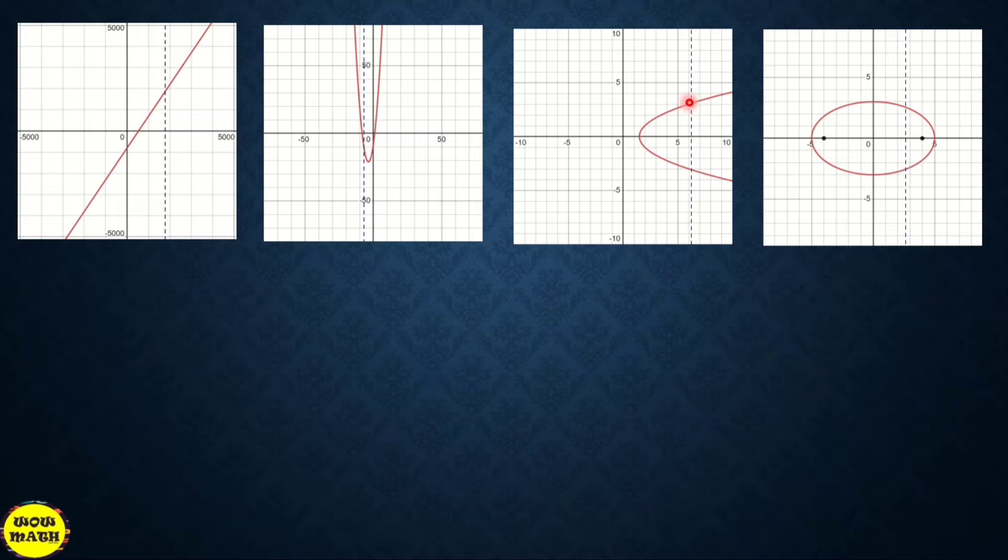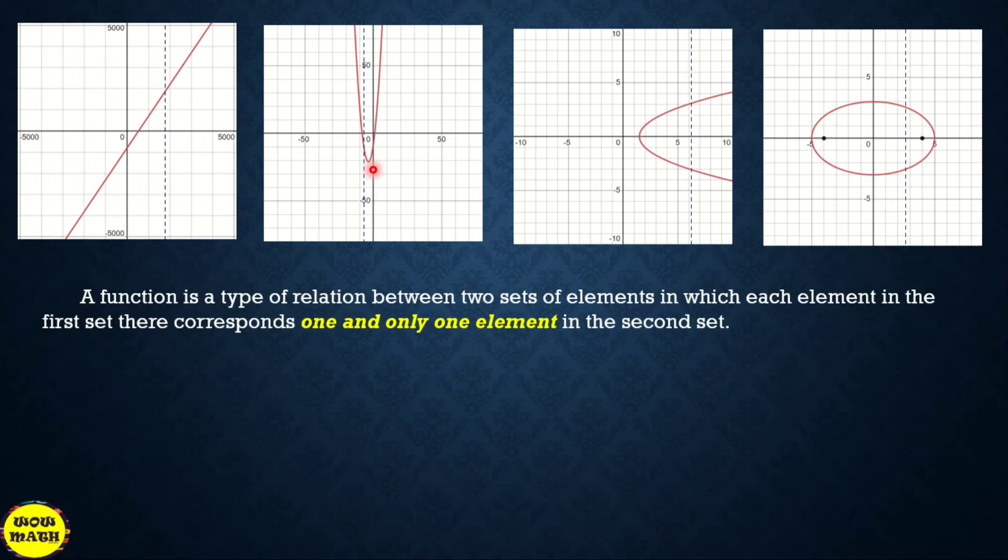Ilang points yung tinamaan sa graph natin? Dalawang beses. Ibig sabihin paano natin ma-identify kung saan dito yung function? So sa apat na yan, only graph number 1 and 2 represent the graph of functions.